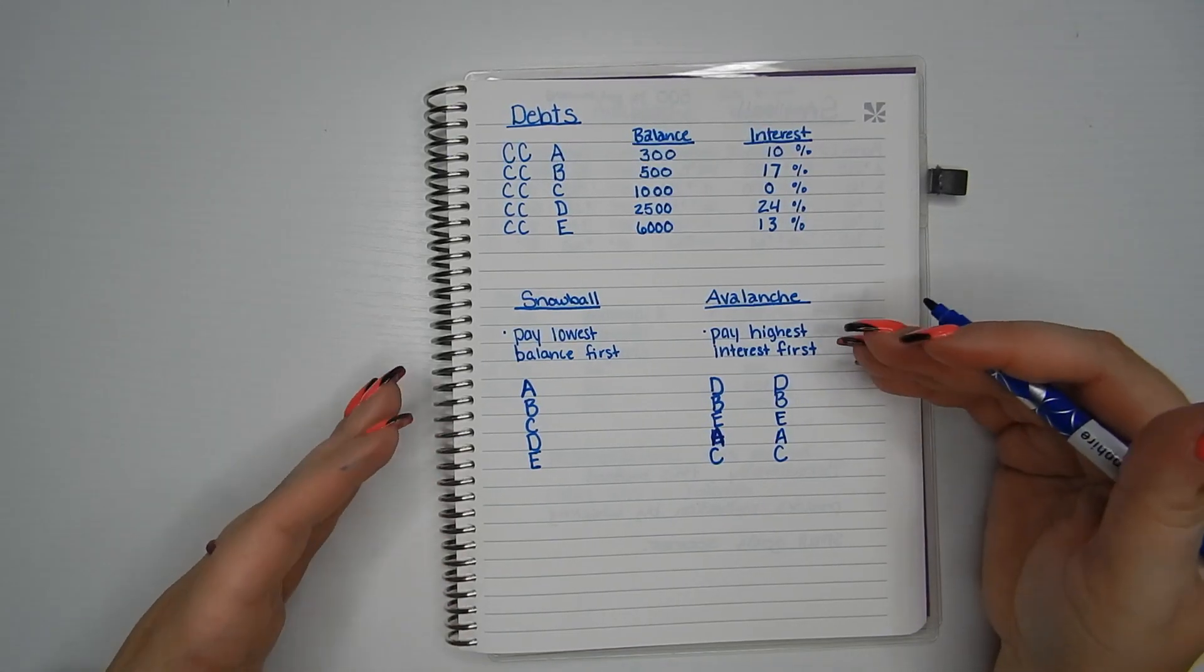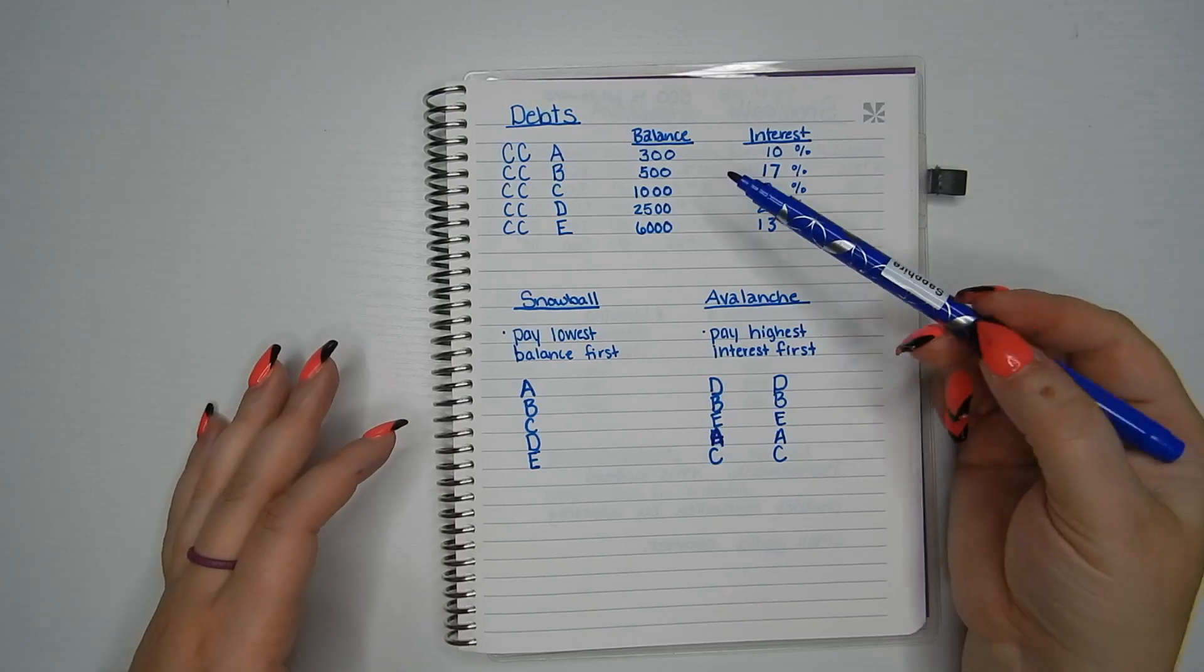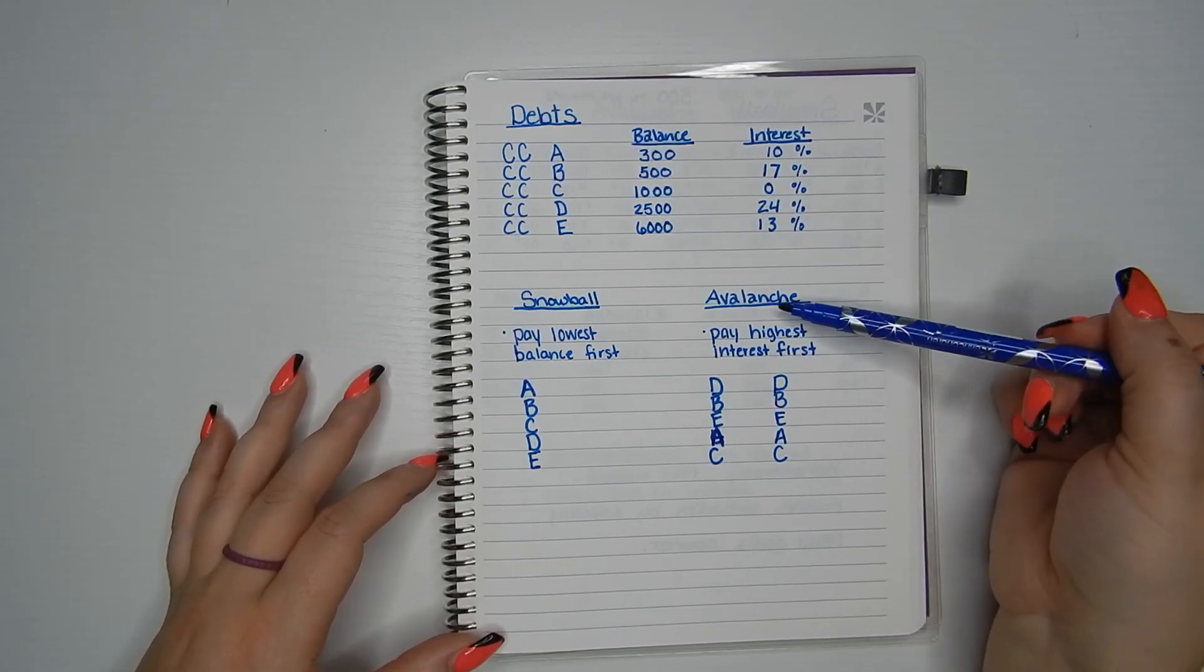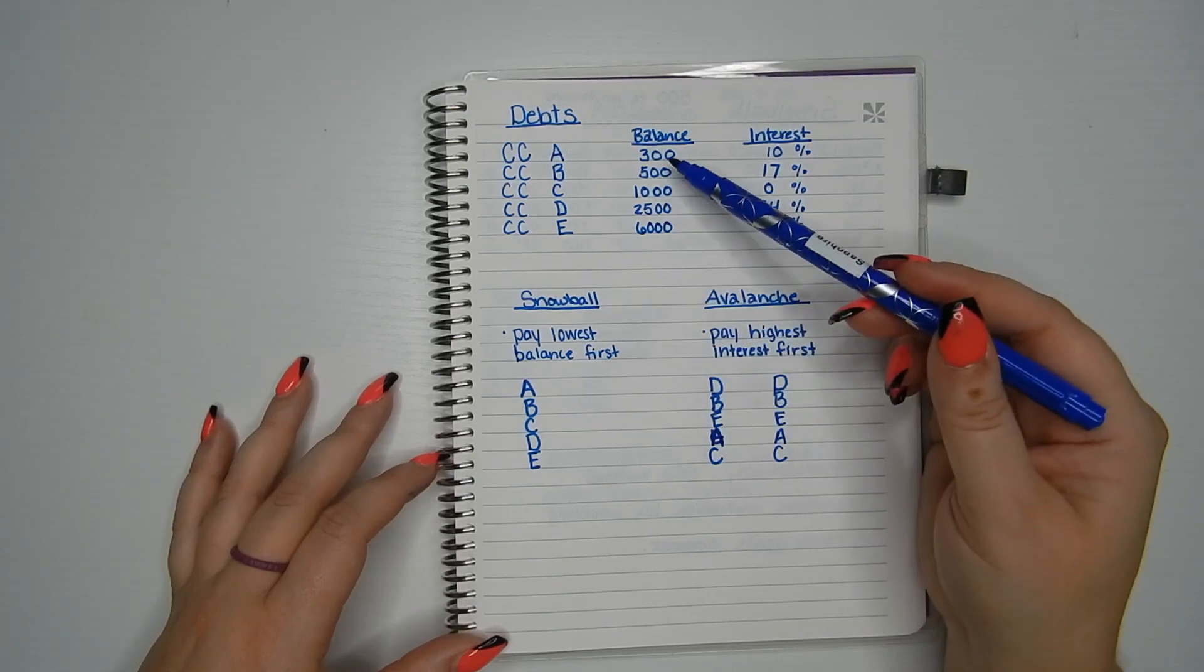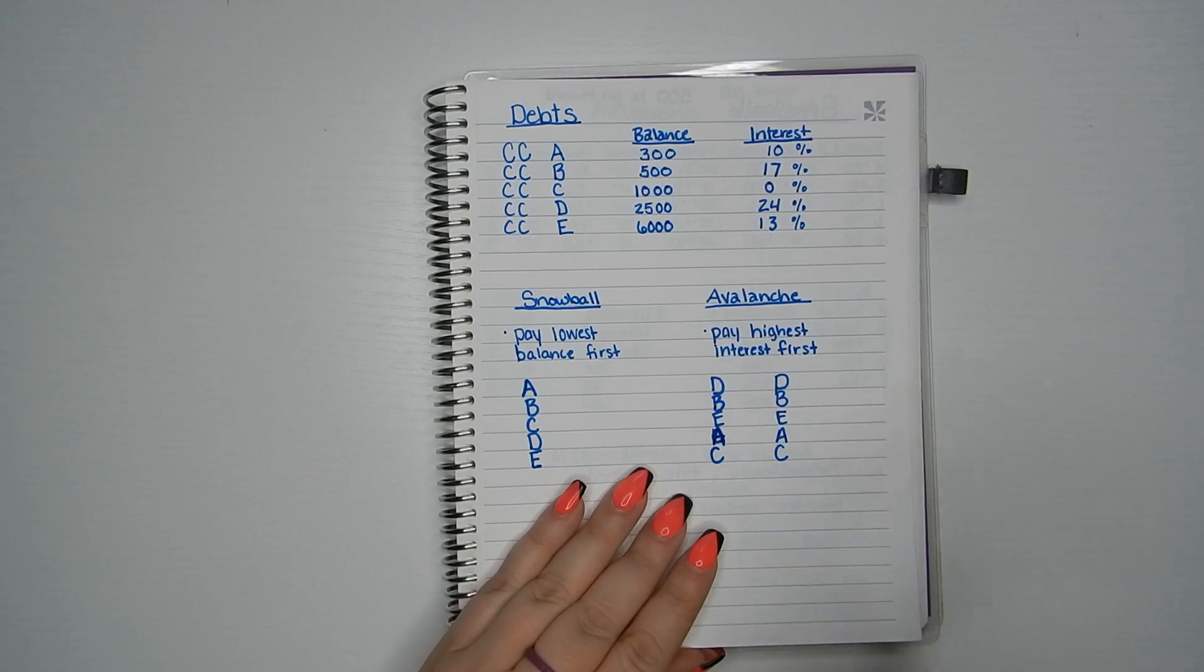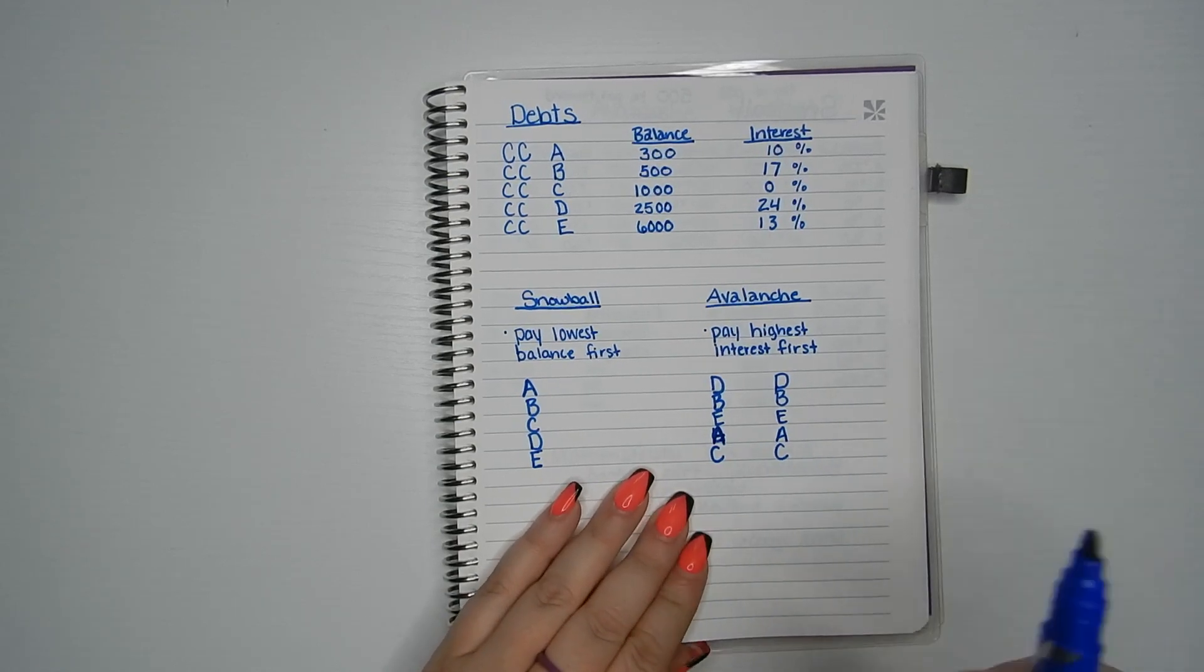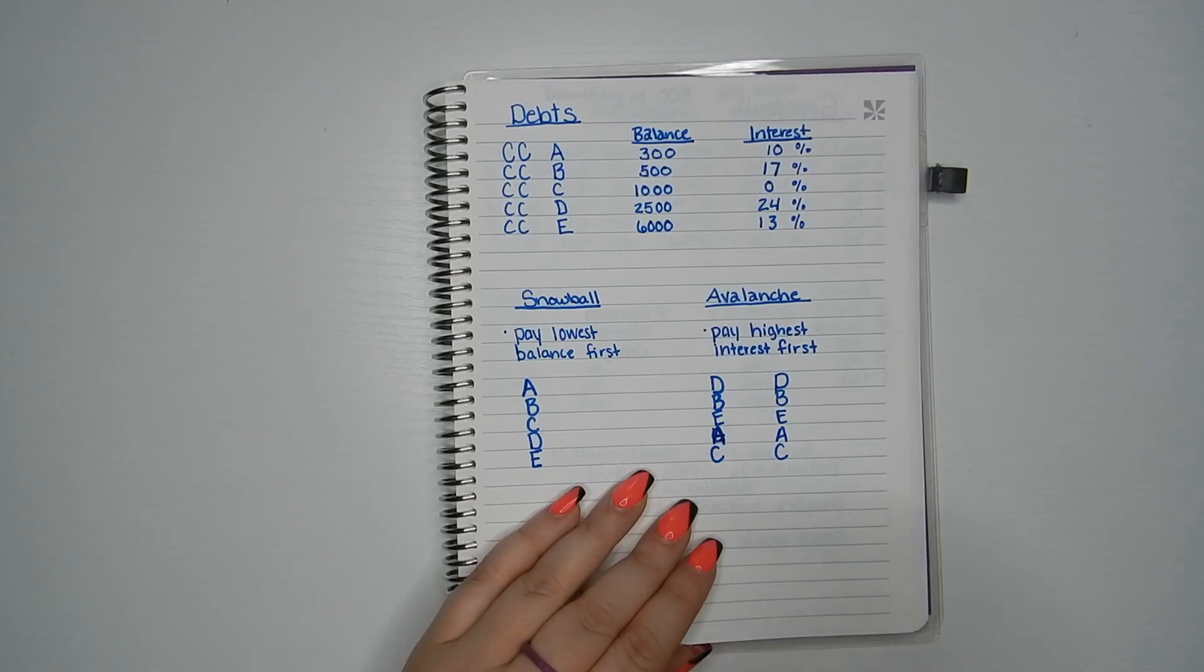So you can already see we're focusing on different cards immediately from the get-go. With the avalanche, we're focusing on a $2,500 debt first. This one, we're focusing on a $300 debt first. So what I've done on the next page is kind of walked you through what the first few months of doing each of these methods might look like.